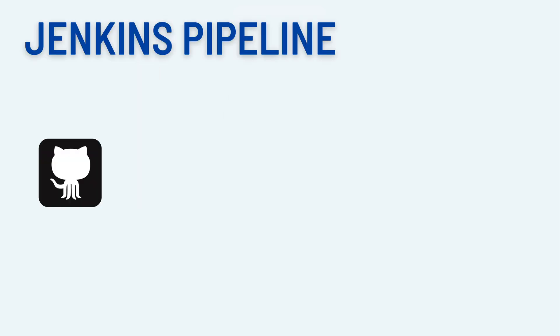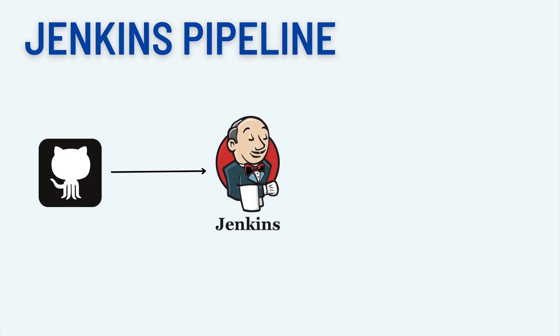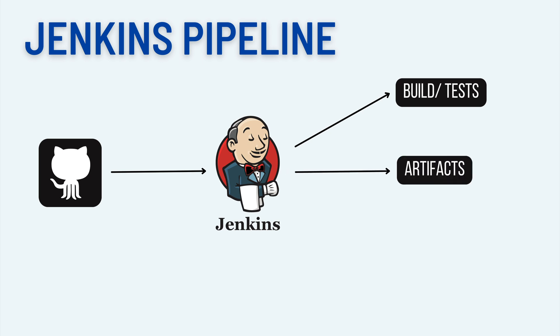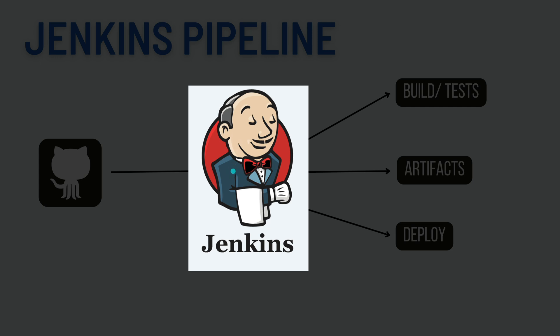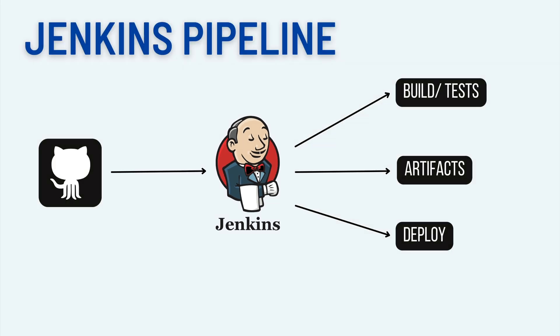In a typical Jenkins pipeline, the CI process always starts with Git. You commit or push the code to Bitbucket or GitHub, and that triggers a Jenkins job. Jenkins plays the main orchestration role — it takes the code, builds it, runs unit tests, and stores the artifact in an Artifactory server. Then you take the artifact and deploy it to staging and run some tests. Jenkins is the crucial orchestrator handling end-to-end orchestration of your jobs.